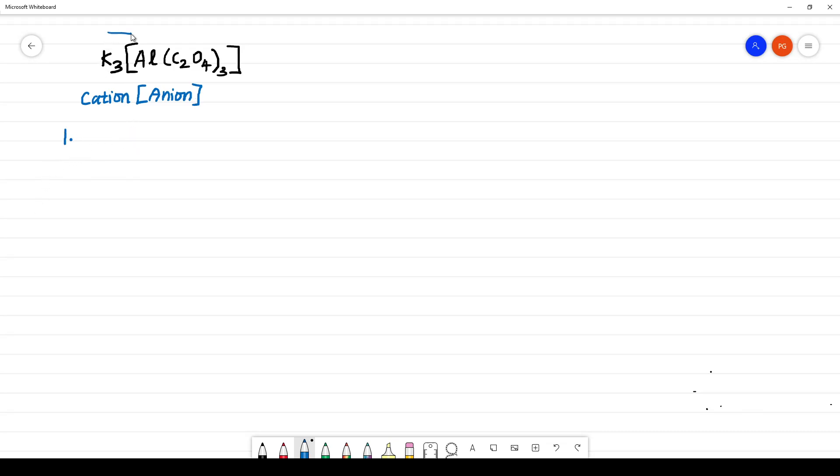First thing is you have to name from left to right. What is first present? Cation is present. Name the cation. What is the cation here? Cation is potassium. So you have to give the name potassium. You should not use tri-di suffix. Only potassium. You have to give the normal name. No di-tri suffix will be used.